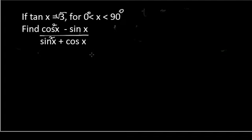If tan x is equals to root 3, for x is between 0 and 90 degrees, find cos squared x minus sin x, everything over sin squared x plus cos x.